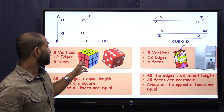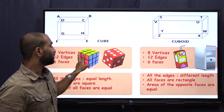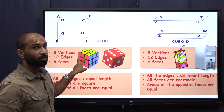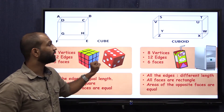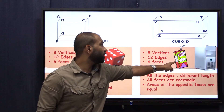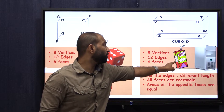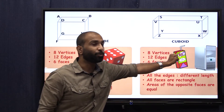These are some examples of a cube: this is a Rubik's cube, this is a dice, this is a juice box, and that's a CPU.